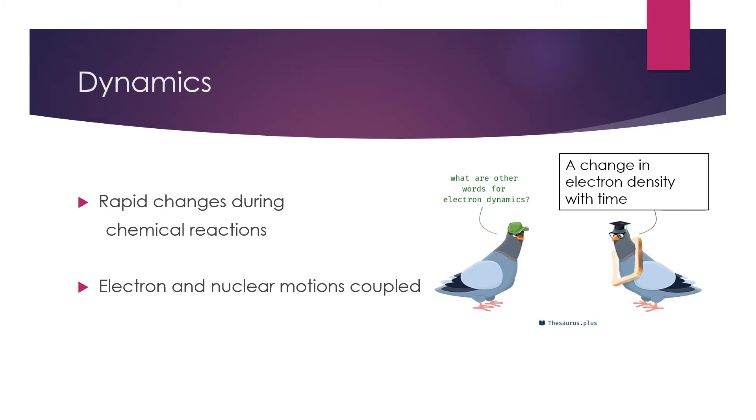During a chemical reaction, these changes in electron density can often occur rapidly, leading to drastic changes in the system of interest. Occasionally, the nuclei of a system will also change positions at a rapid pace, often on a similar timescale to the electron motion.